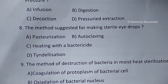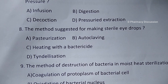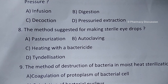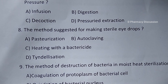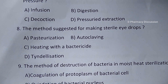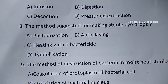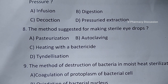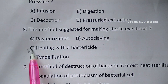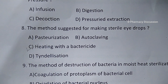Question number 8: the methods adopted for making sterile eye drops. Option A. Pasteurization, B. Autoclaving, C. Heating with a bactericide, and option D. Tyndallization. Correct answer is option C, that is heating with a bactericide.